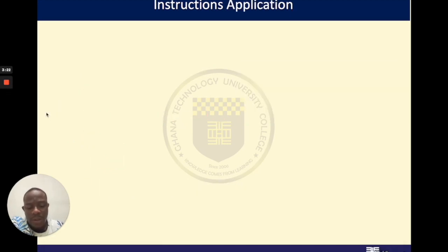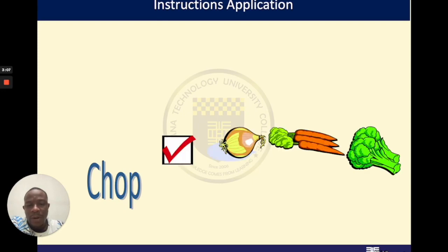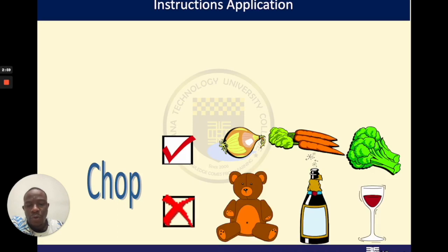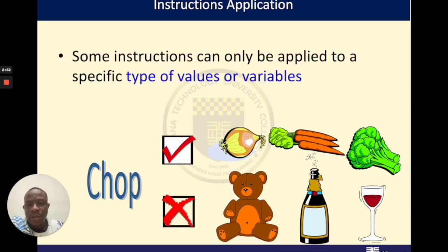Let's look at a particular example. Consider an instruction like 'chop'. When you are cooking and you want to issue an instruction like 'chop', chop can only be applied to certain types of ingredients. You cannot say that somebody cooking should chop, for instance, a teddy bear, a wine bottle, or a wine glass. So instructions can only be applied to specific types of values or variables.